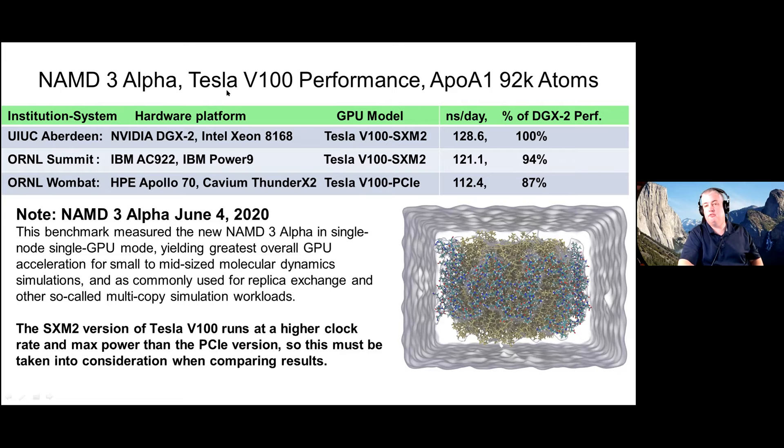This is a single-node run on just a single GPU. My conclusion is that there were no surprises—it was straightforward work—and we expect ongoing work to optimize NAMD for ARM will close remaining gaps. I hope we can do a more apples-to-apples comparison when we have other hardware available for testing.